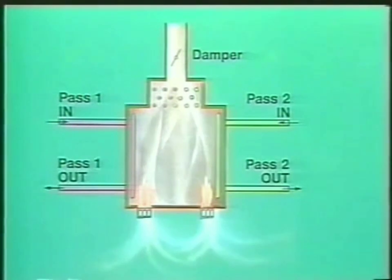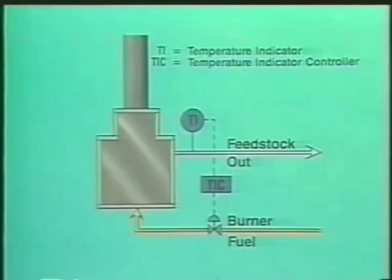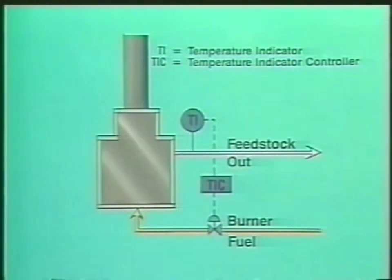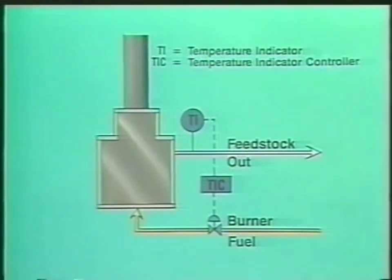After circulating through the tubes of the furnace, the feedstock is rejoined at the outlet. There is a target outlet temperature for the process flow, and this is used to determine the amount of fuel going to the burners. In an automatic control scheme, the outlet temperature is monitored by a temperature controller which controls the flow of fuel to the burners.